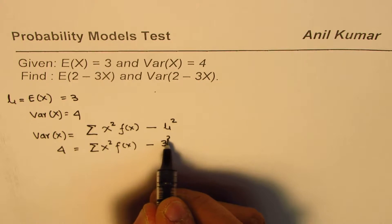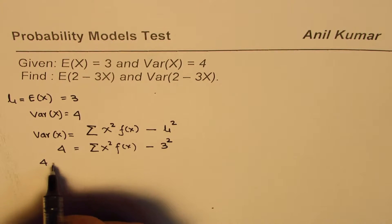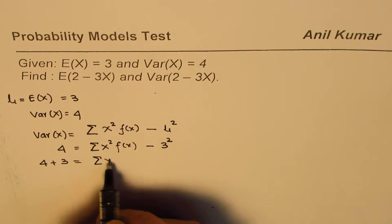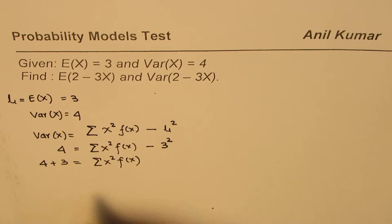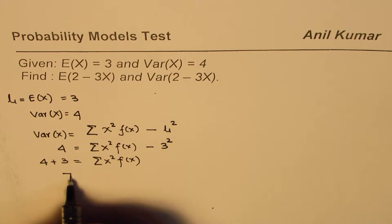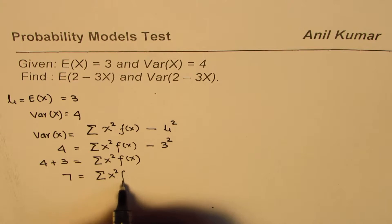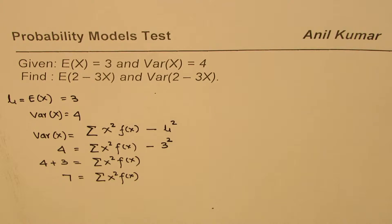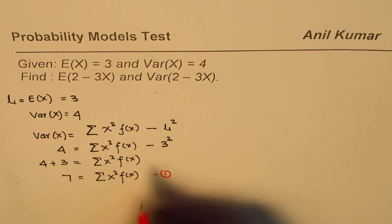3. So it will be 3 squared. So if you reorganize, you get 4 plus 3 equals to this constant, x squared fx. So 4 plus 3 is 7. So 7 is this constant. So that is one equation which is going to help us solve this particular question.